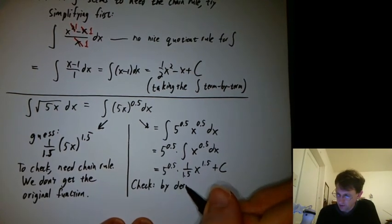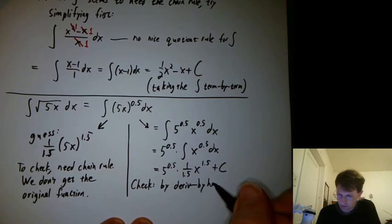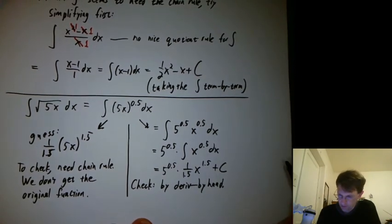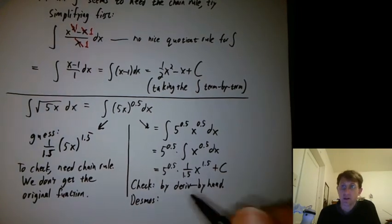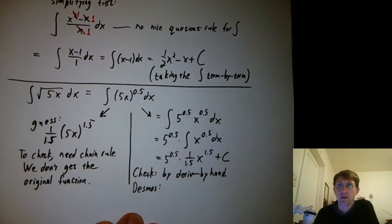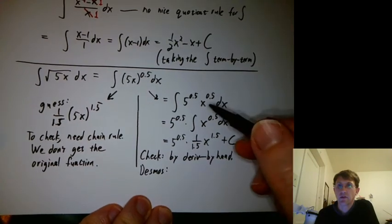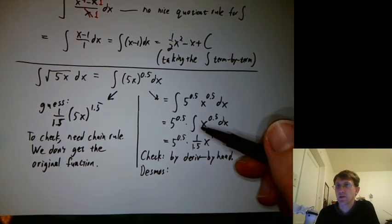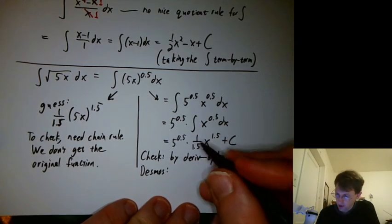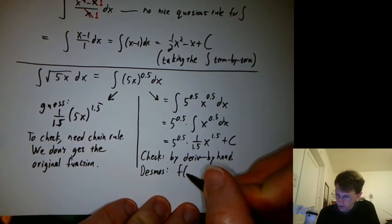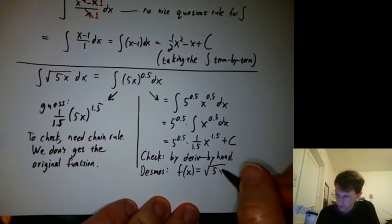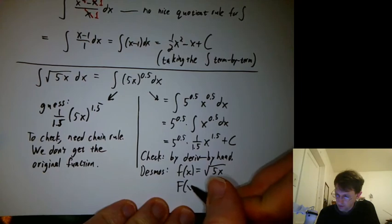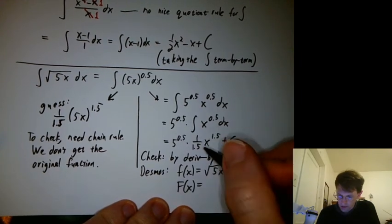By taking the derivative by hand. And you can also do it in Desmos. So remember we can't just use an integral sign like this plain in Desmos. So we'll see in Chapter 5.2 how you can use an integral sign in Desmos. But for now, I'd say f of x equals, little f of x equals root 5x.